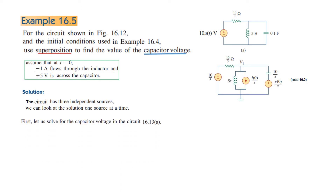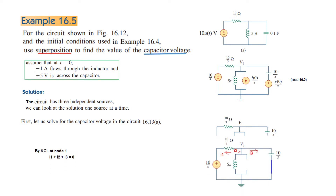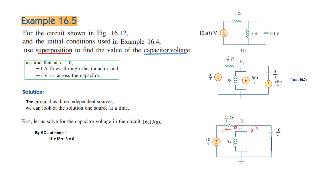First, let's solve for the capacitor voltage in circuit 1613a. In this circuit we keep only the left source and make the other two sources zero. The current source is made zero by making it an open circuit, and the voltage source is made zero by making it a short circuit. This voltage we call v1 for the first (leftmost) source, which is also the voltage across the capacitor.